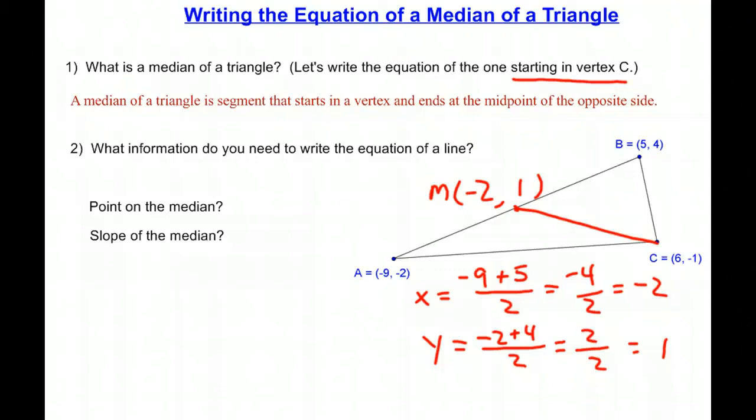A reminder of what we need in order to write the equation of a line. We need the formula and we need to have a point on the median. So I'll actually be able to either use C or point M, but we have plenty of points. And I also need to know the slope of the median. So let's go calculate the things that we need.